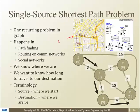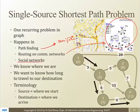For example, navigation, path finding, routing on computer internet networks - that's another challenging issue in finding shortest path. And these days, social networks is another type of finding shortest path problems.